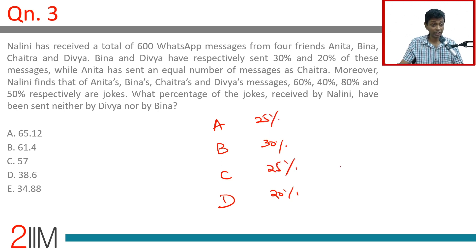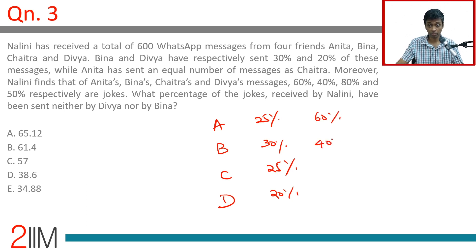Moreover, Nalini finds that of Anita's, Beena's, Chaitra's, and Divya's messages, 60%, 40%, 80%, and 50% respectively are jokes.